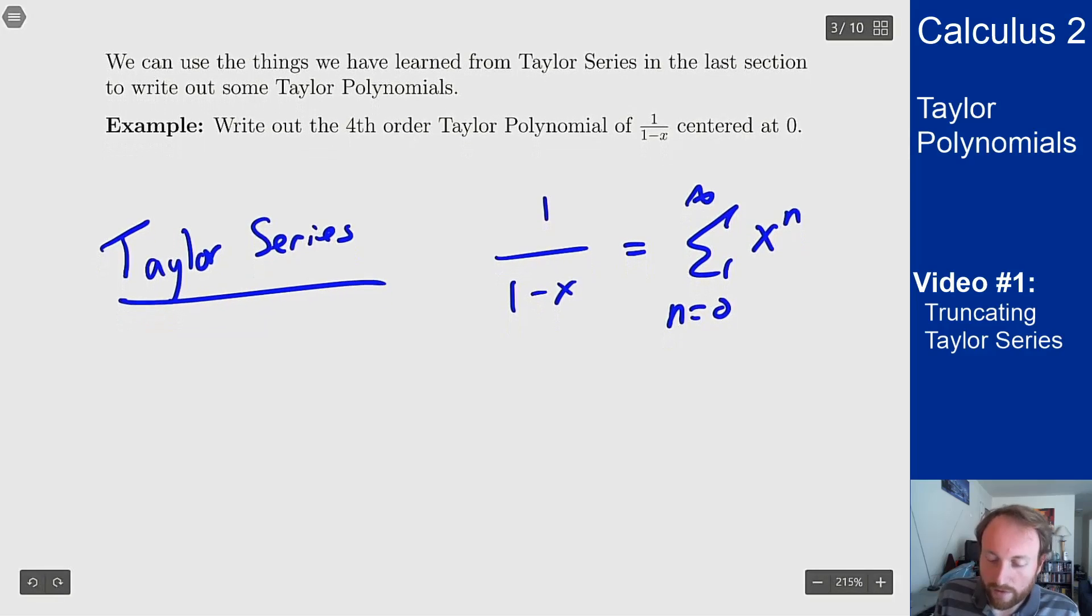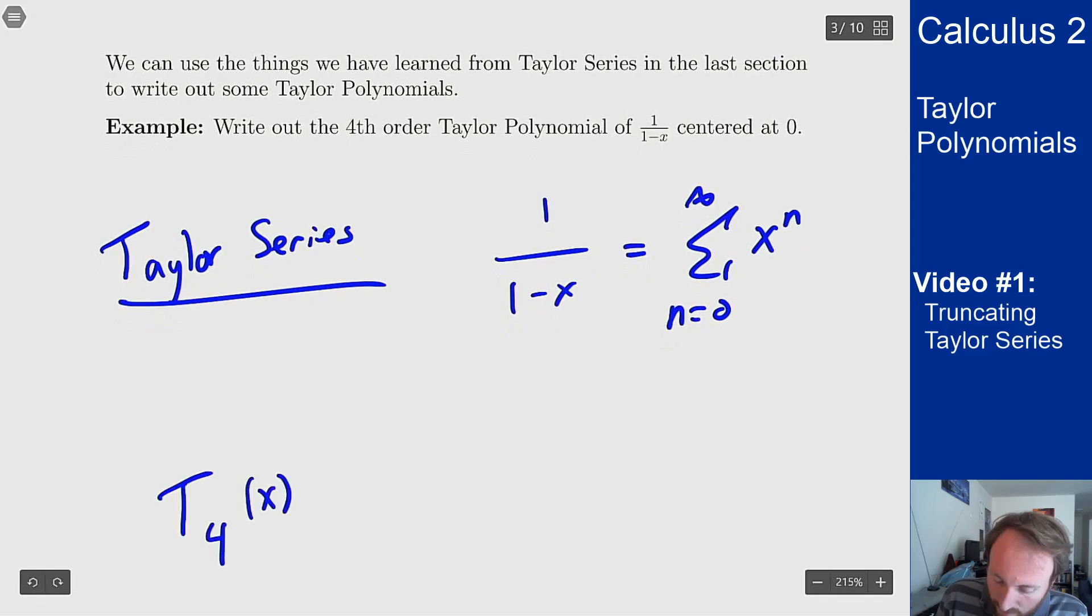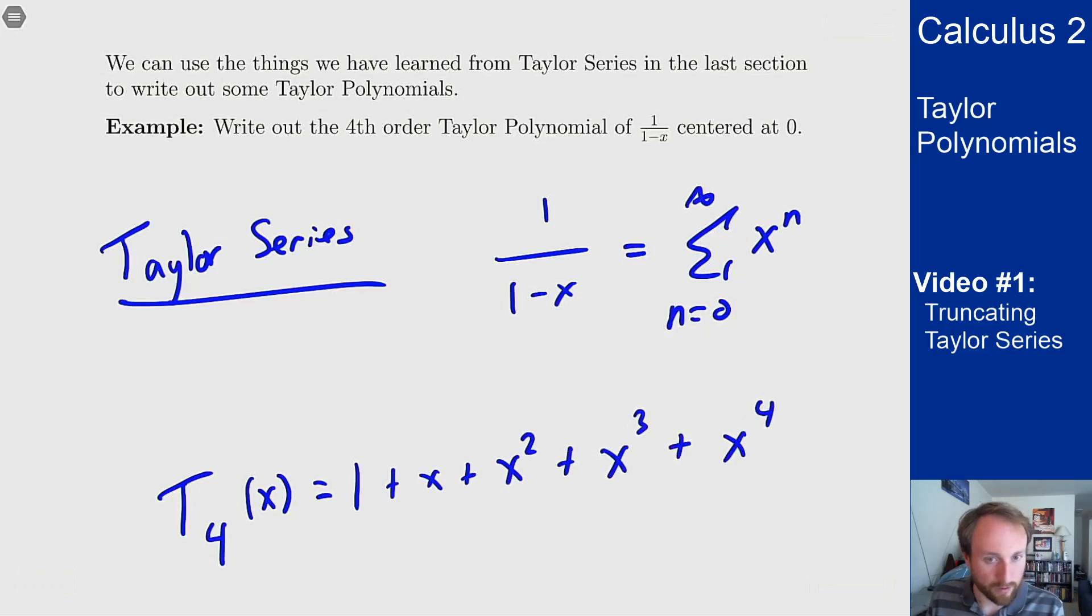What is the fourth-order Taylor polynomial? It's just the terms up to degree four in this series, so it's 1 + x + x² + x³ + x⁴. Note it's not four terms—it's terms up to degree four, so five terms.